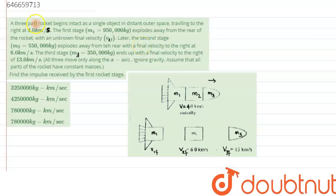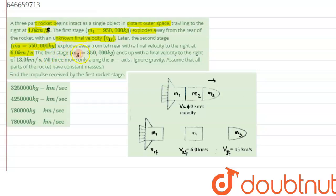We are given a question: a three-part rocket begins intact as a single object in outer space, traveling to the right with a speed of 4 km/s. The first stage has mass m1 = 950,000 kg and explodes away from the rear with unknown velocity v1f. The second stage has mass m2 = 550,000 kg and explodes away with a final velocity of 6 km/s to the right. The third stage has mass m3 = 350,000 kg and ends up with a final velocity of 13 km/s to the right. All three move along the x-axis; ignore gravity and assume constant masses.